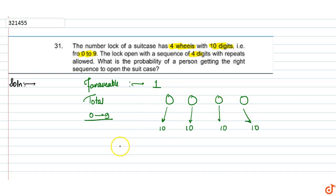So total outcome is 10 into 10 into 10 into 10. And how many cases can happen in which lock opens? This is the correct case. So what will the probability be?